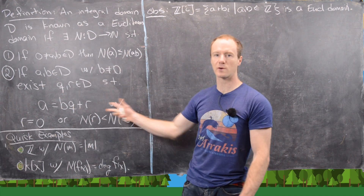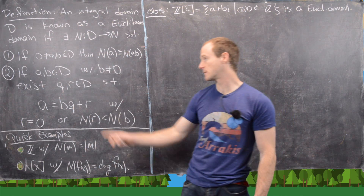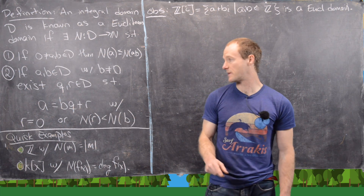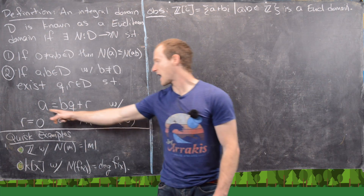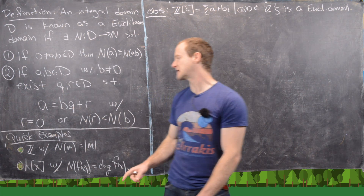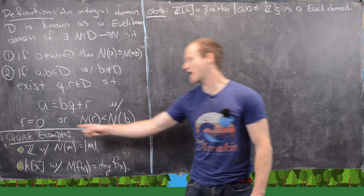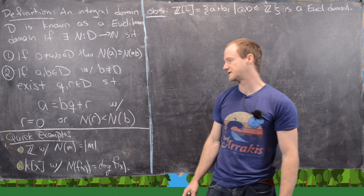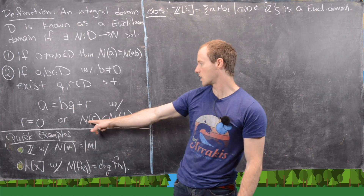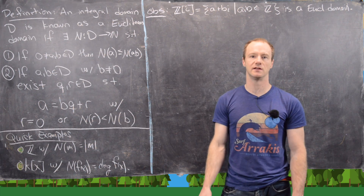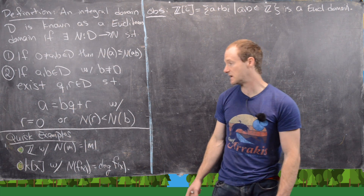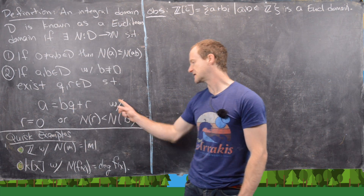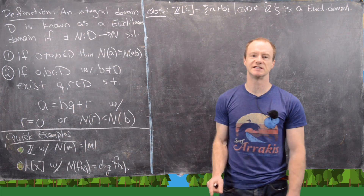You have elements Q and R which are in the domain, where A equals B times Q plus R, where either R is equal to zero — that would be like a remainder of zero — or the norm of R is less than the norm of B. In other words, the size of R is less than the size of B.